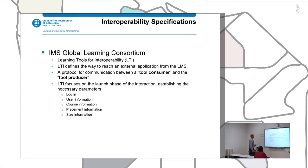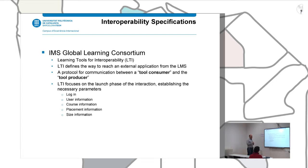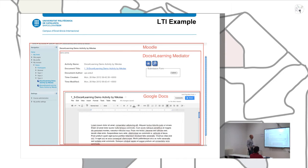A second specification, which we will discuss more, is the one provided by the IMS Global Learning Consortium — called Learning Tools Interoperability, or LTI. LTI defines the way for an external application to reach within the LMS. You have the LMS as the tool consumer, and the external tool as the tool producer. LTI focuses on the launch phase and provides a set of parameters so that communication can be achieved. This is an example we developed internally: this is the Moodle LMS, and inside you can see that we are accessing Google Docs, providing a view of Google Docs within the LMS.